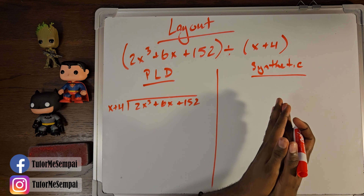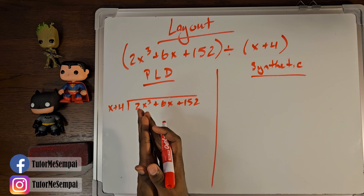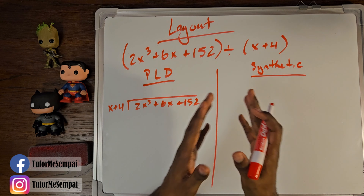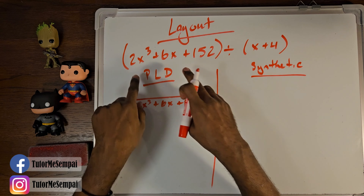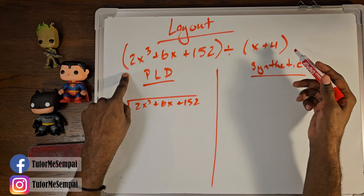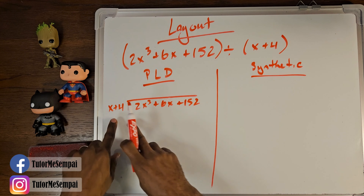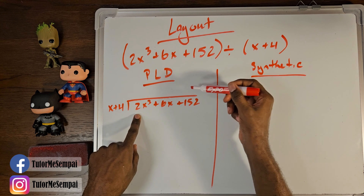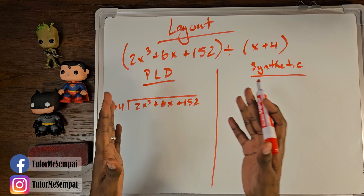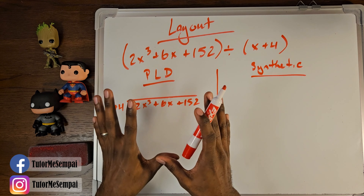So today we're going to be focused on Synthetic Division, even if you're already very well versed in Polynomial Long Division. To start us off, we're going to compare the layout of the two. Synthetic Division looks pretty similar yet pretty different from Polynomial Long Division. For this question — 2x cubed plus 6x plus 152 divided by x plus 4 — we would write it in this fashion for Polynomial Long Division. You see your divisor out here, you have your divot in here, and the quotient goes on top. But if we write this same question in Synthetic Division form, it's going to look a little similar, yet pretty different.